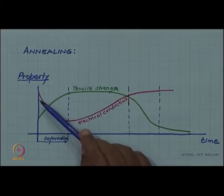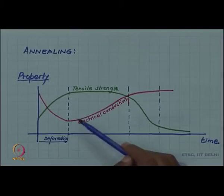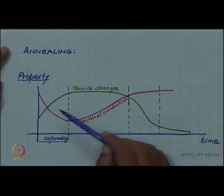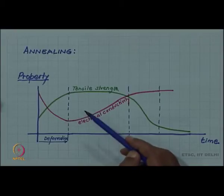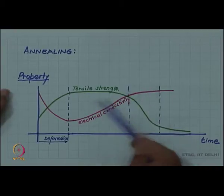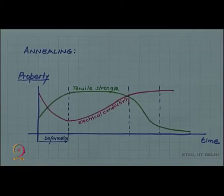Electrical conductivity comes down because dislocation and point defect density scatter electrons. They increase the electrical resistivity of the material or decrease the electrical conductivity.